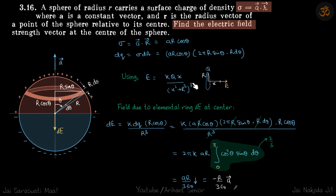Now we know this formula for the ring at a distance x: field is kqx/(x² + r²)^(3/2). So field due to this elemental ring, we are going to use this same formula.